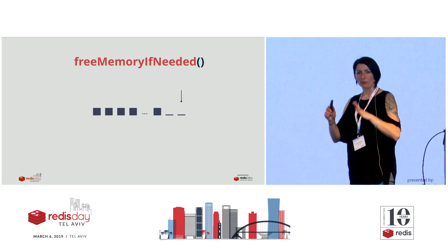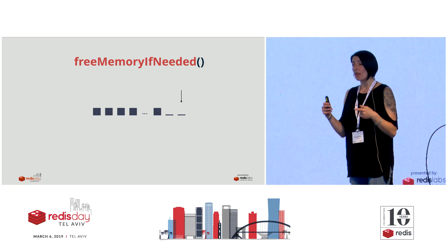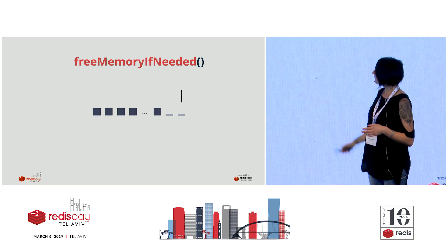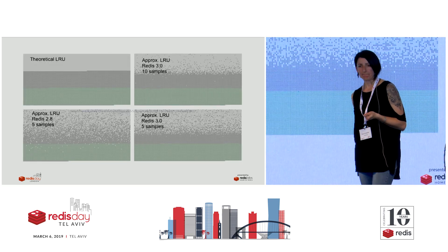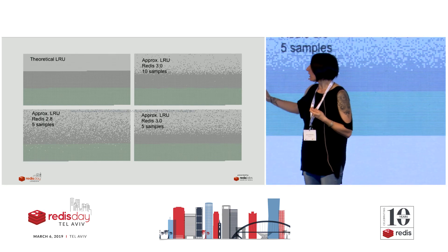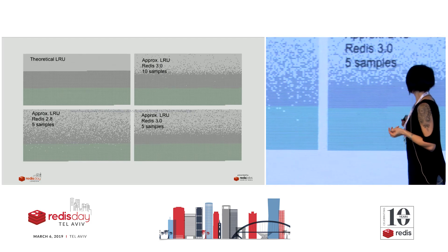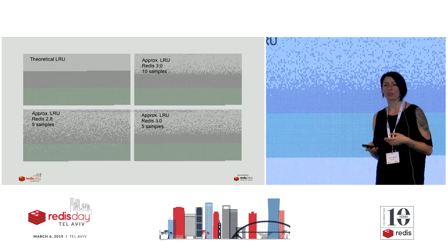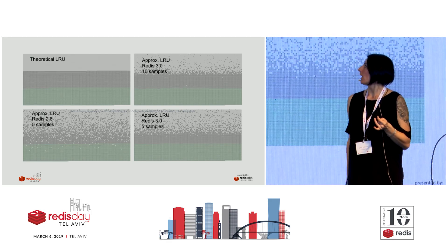We populate the pool every time we need to free memory, for every database. Once we are sure we have good candidates in the pool, we start from the right going to the left, and when we find the element we want to evict, we take it out of the pool and evict it. With this approach, we got much better performance of the LRU algorithm. Here you can see how it performed in Redis 2.8 where we were just sampling X random keys with five samples, and after the pool was implemented with five samples, you can see that with 10 samples we are getting very close to the theoretical LRU.